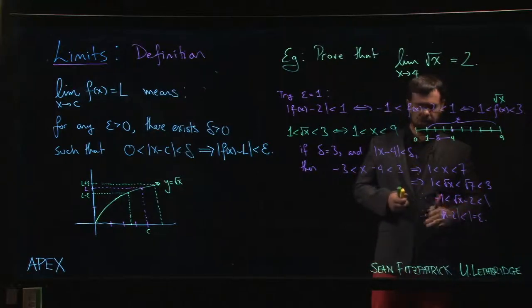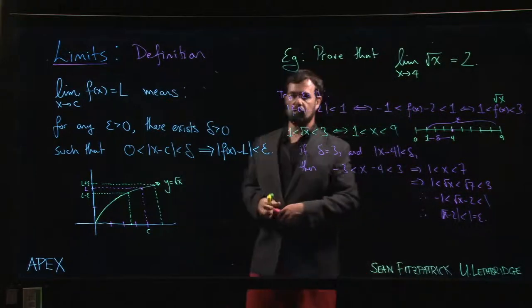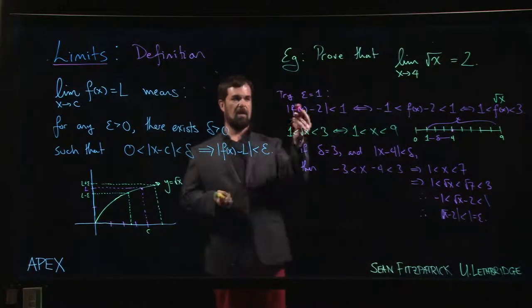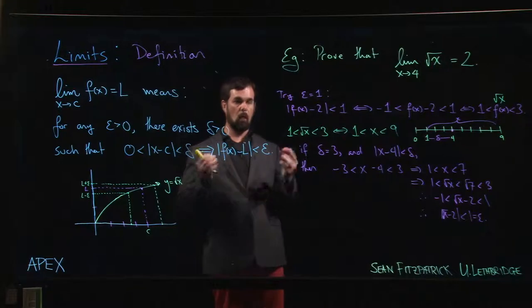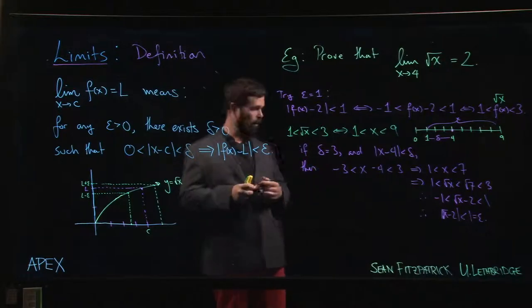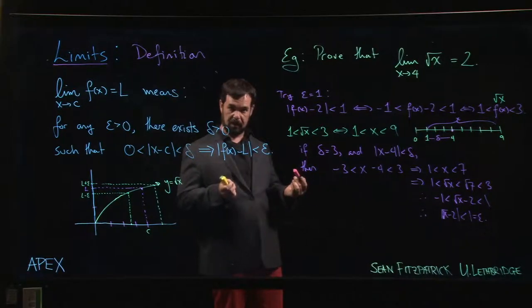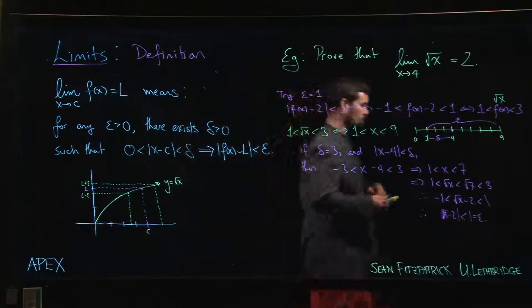What we want to do here is we want to now figure out how do you make this work if epsilon isn't one, if epsilon is some arbitrary number? How do we modify the argument to make it work? We'll show you how to do that in the next video.